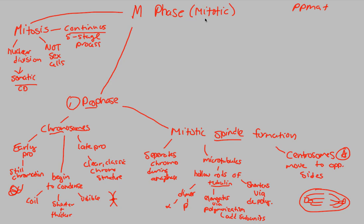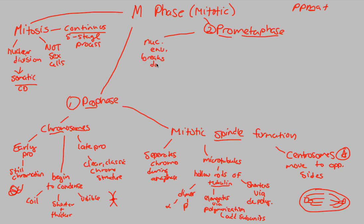Next is step two: prometaphase. Break down the word — 'pro' means early, so this is the phase right before metaphase. In G2 the nuclear envelope was still there, but in prometaphase the nuclear envelope actually breaks down. It breaks down because the chromosomes need to get out of the nucleus and move toward the center to start metaphase.